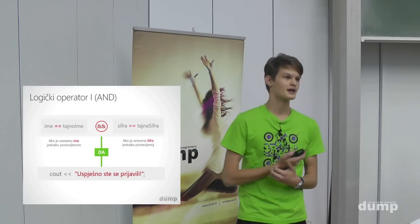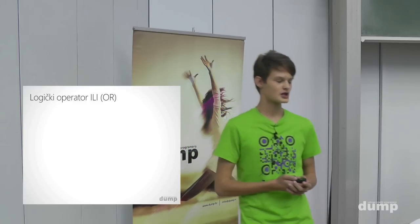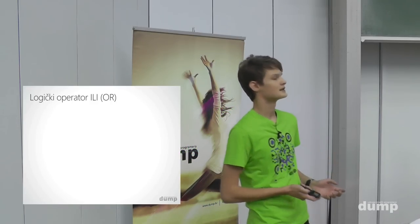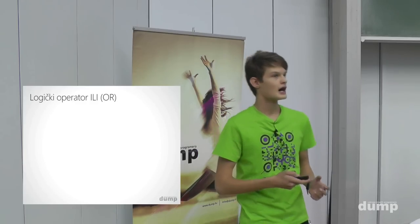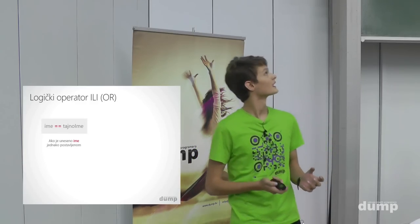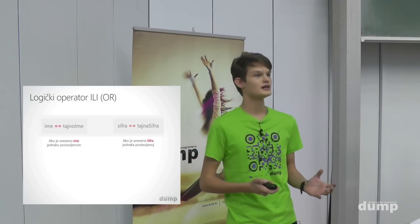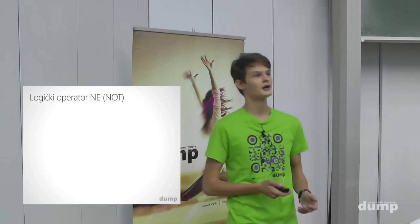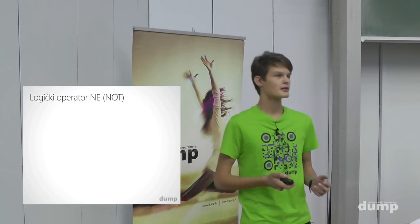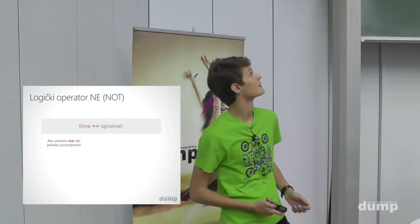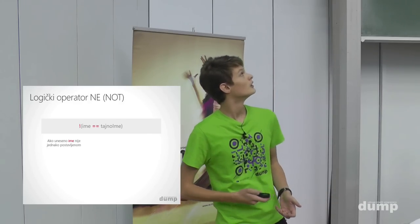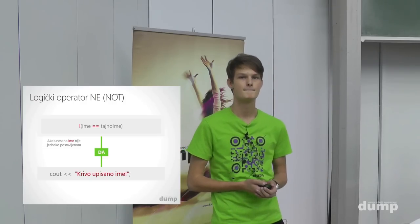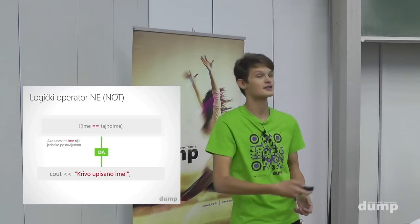Logički operator 'ili' koristimo kada želimo da konačna vrijednost bude istinita ako je barem jedan od uvjeta istinit. Primjerice, ako je ime jednako tajnom imenu ILI šifra jednaka tajnoj šifri — korisnik je upisao ili točno ime ili lozinku. Logički operator 'ne' koristimo za obrnute vrijednosti — primjerice, ako ime nije jednako tajnom imenu, korisnik nije točno upisao ime, što se može napisati i kao: ime različito od tajnog imena.